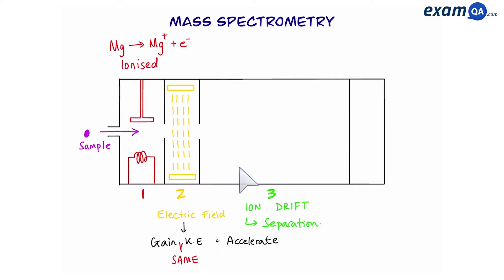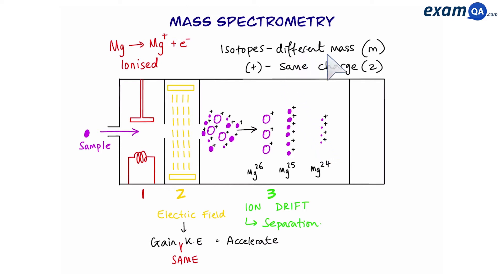In stage 3, the ions move into the longest part of the machine where they drift and separate. So the mixture of ions, which were once together, now begin to separate. We can see that the lighter ones are moving faster than the heavier ones. We know that isotopes have different masses, but they all have the same charge. As a result, they have different mass to charge ratios.